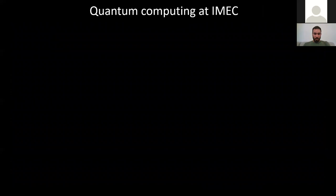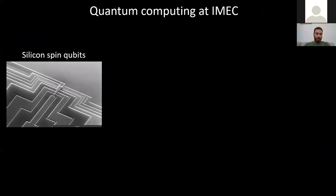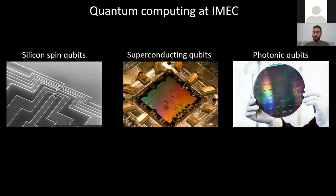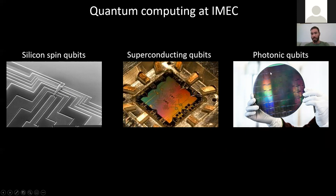At IMEC there are three quantum computing research lines: silicon spin qubits, superconducting qubits, and photonic qubits. The first two are internal IMEC research programs, while the photonic qubits program is a partnership with the Canadian company Xanadu.